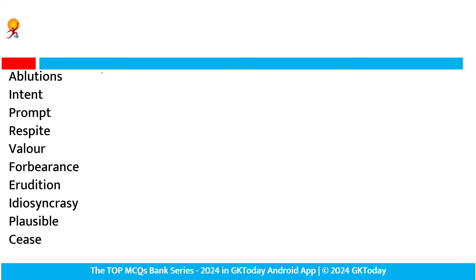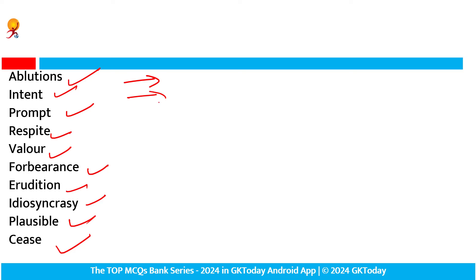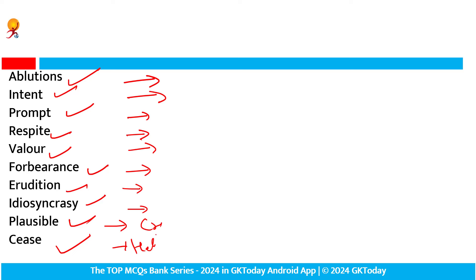So isi ki saath — jo aaj humne words discuss kiye: ablution, intent, prompt, respite, weller, forbearance, erudition, idiosyncrasy, plausible, cease. Ablution yani cleansing. Intent yani to have a plan. Prompt yani immediate. Respite yani break. Weller yani brave. Forbearance yani patience, persistent, endurance. Erudition yani great knowledge, scholarship. Idiosyncrasy — a mode of behavior, trait. Plausible yani credible. Cease yani hard — stop.